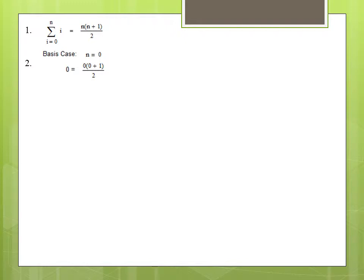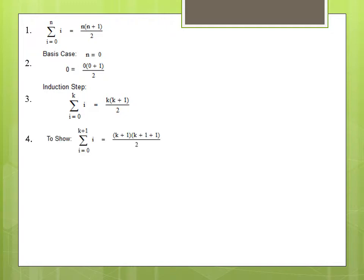Zero equals zero! Let's come up with an inductive hypothesis. If we take the first k integers and sum them, their sum is equal to k times k plus one over two. We want to show that the sum of the first k plus one integers is equal to k plus one times k plus two over two.